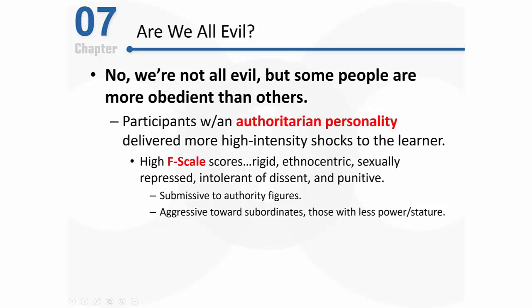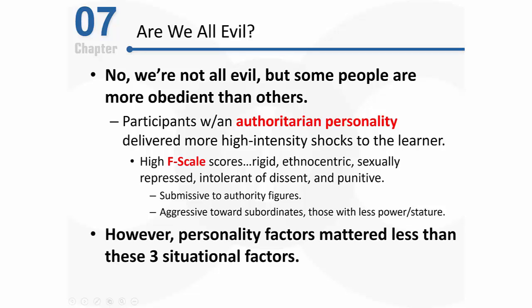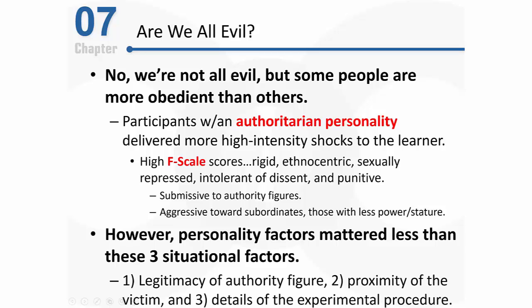People with an authoritarian personality are submissive to authority figures and aggressive toward their subordinates, making them well-suited to follow the experimenter's orders to harm the learner. However, personality factors like authoritarianism mattered much less than three situational factors in predicting obedience. By running more than 20 variations of his experiment, Milgram identified three particularly important factors: the legitimacy of the authority figure, the physical proximity of the victim, and various details of the experimental procedure.